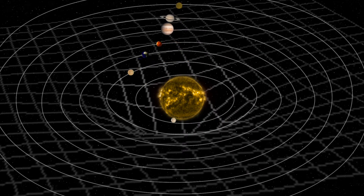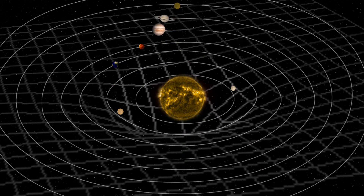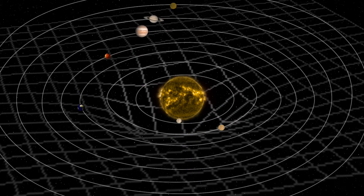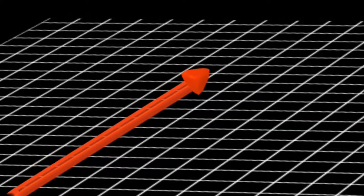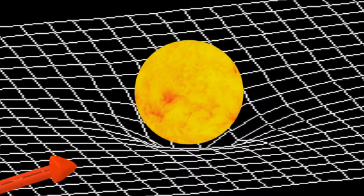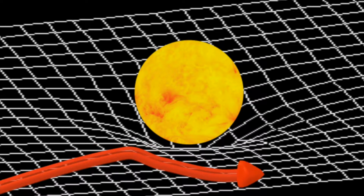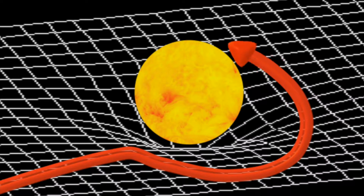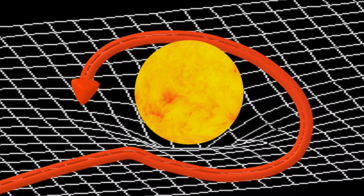Throughout this series, we explored gravity in space. When an object moves through empty space, it moves in a straight line. However, massive objects like planets and stars curve space around them. Now our object also moves in a curved path around the object's curved spacetime.